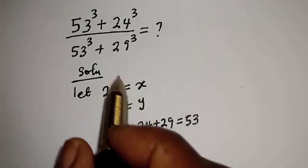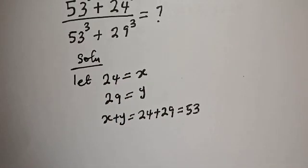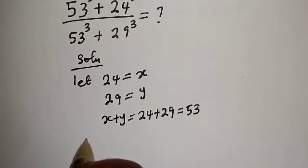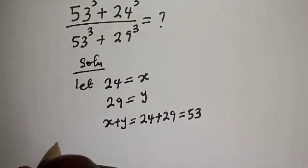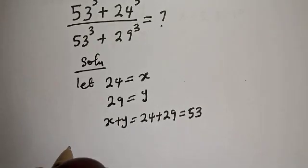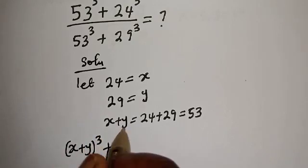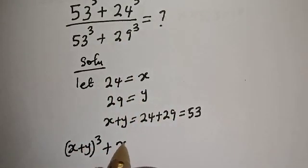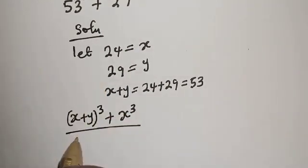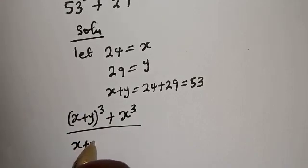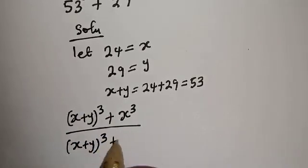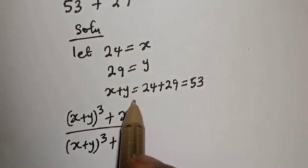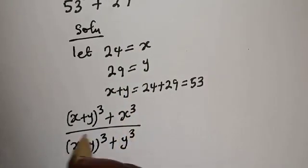Let's substitute back into this question. We have: s plus y, raised to power 3, plus s raised to power 3 — that is 24 — over s plus y raised to power 3, plus y raised to power 3 — that is 29.